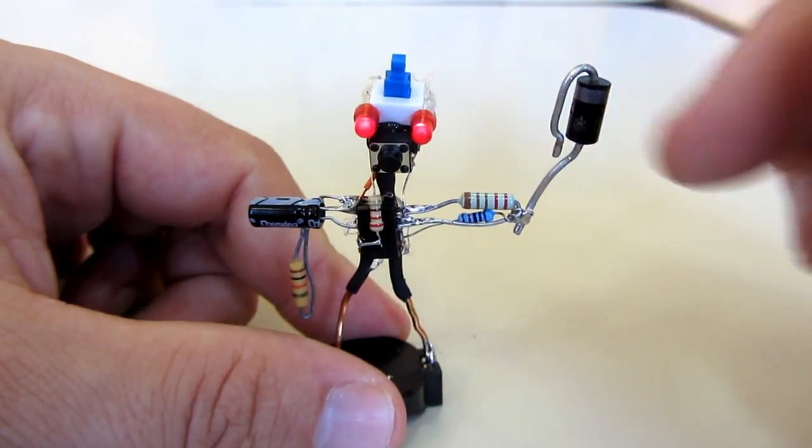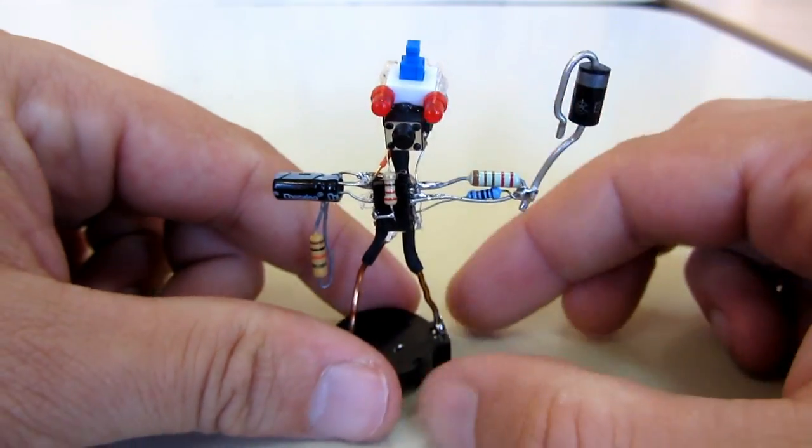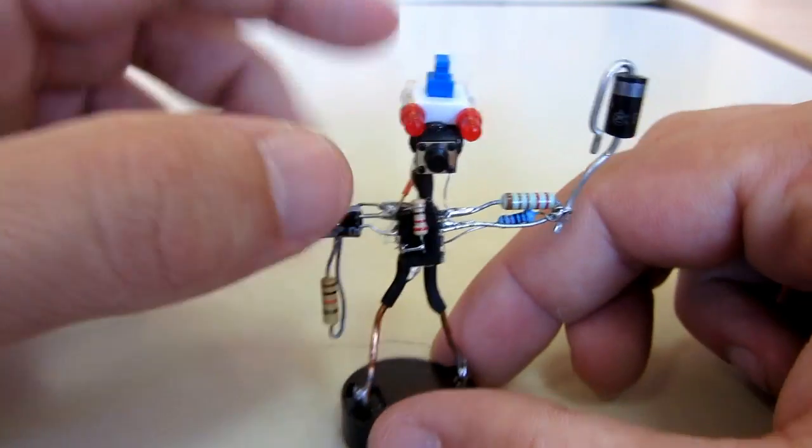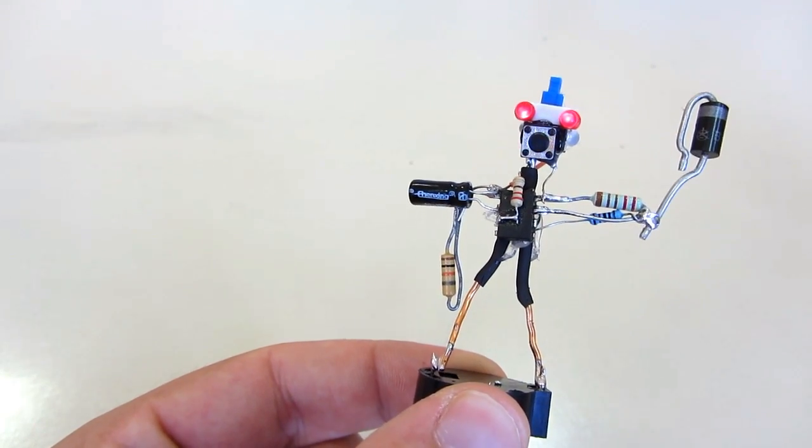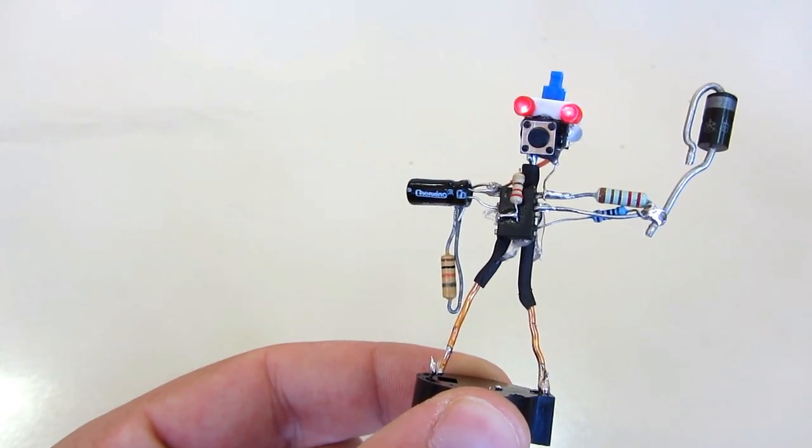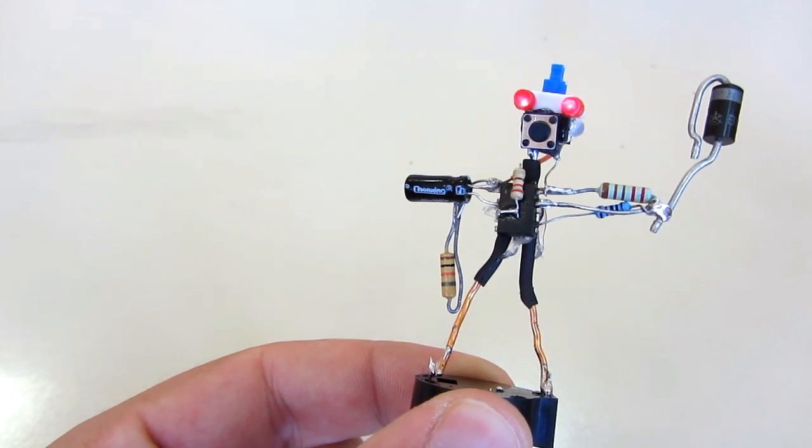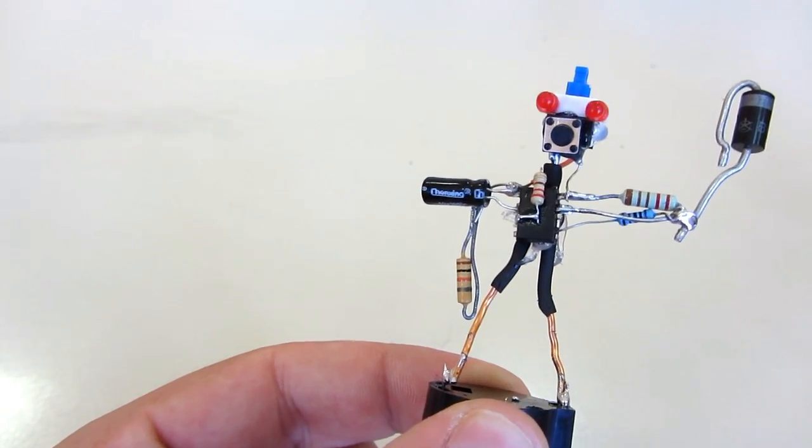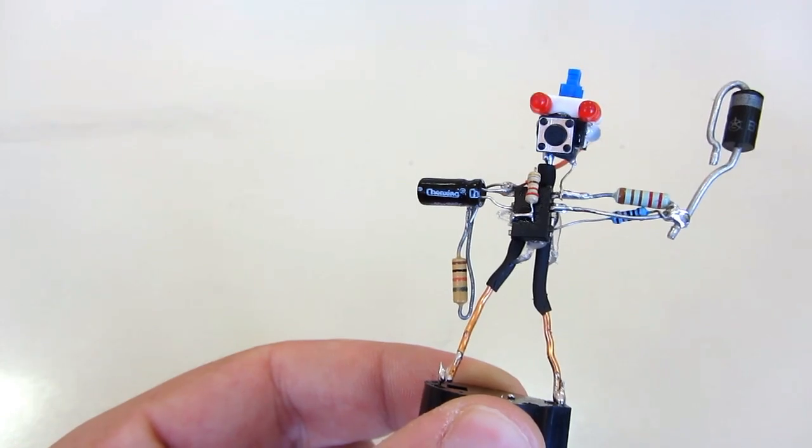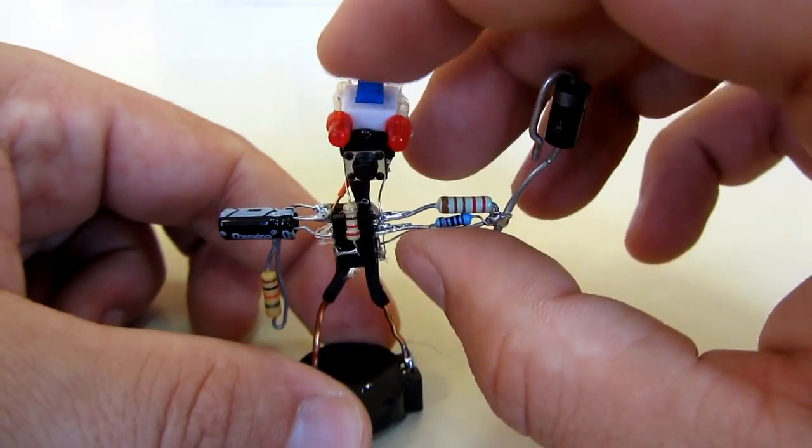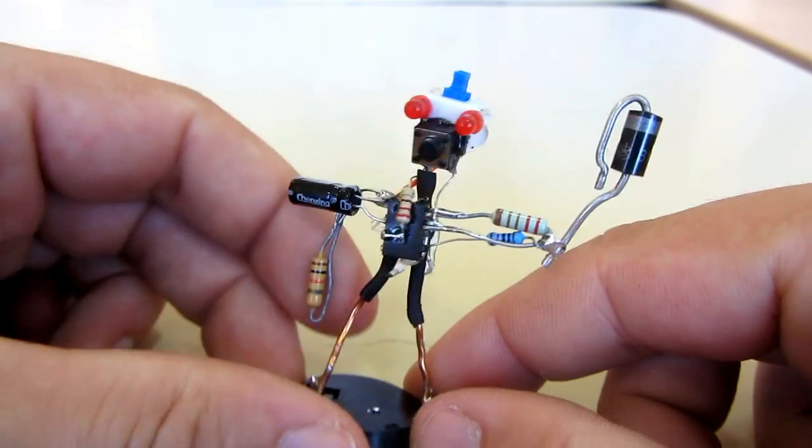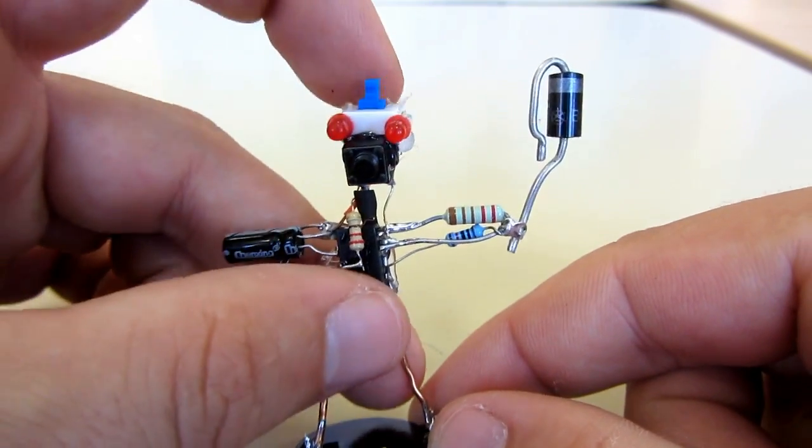The legs are soldered directly to the plus and minus of the battery. Other components like the push button, big diode on the right hand, and resistor on the left hand are only decoration. The robot can be turned off or on using the switch on the head.